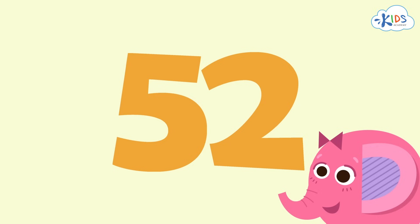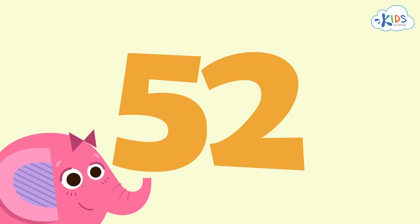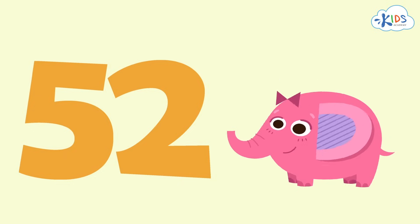I'll leave you with a challenge: can you tell the value of the digits in the number 52? What is the value of the five? What is the value of the two? You can pause the video if you need more time. Here's the answer: the two is in the ones place, so it's just worth two. The five is in the tens place, so we count by tens five times: 10, 20, 30, 40, 50. The value of the five is 50.